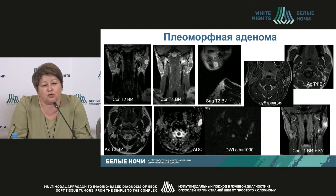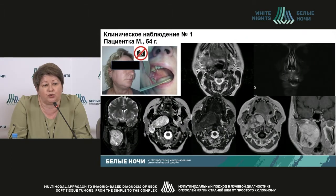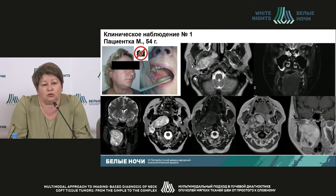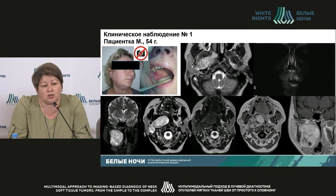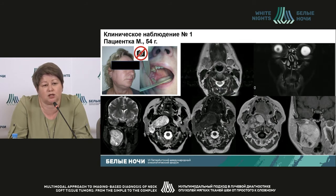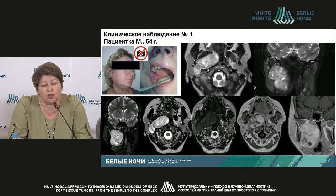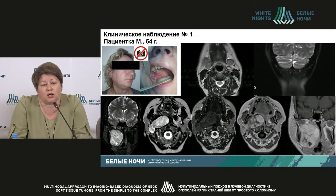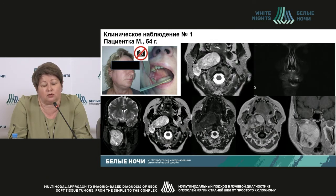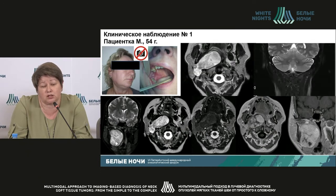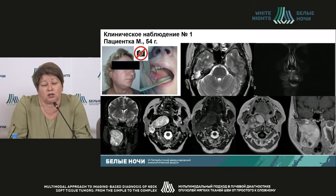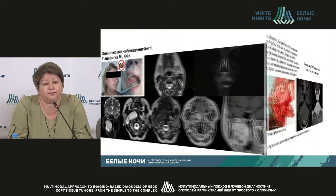Now it's standard — we always use diffuse-weighted sequences with diffusion mapping. Clinical case: female patient, 54 years old. She came to an ENT doctor and complained about problems swallowing. There was no swelling in the parotid area, but there was deformation of the side wall of the pharynx. MRI was made. MRI helped visualize a rather big neoplasm coming from the pharynx — heterogeneous, mainly hyperintense signal with accumulation of contrast when introduced intravenously. Surgery was conducted.